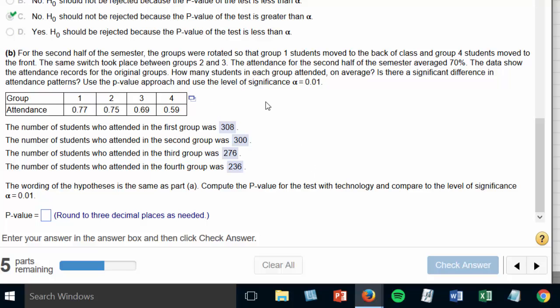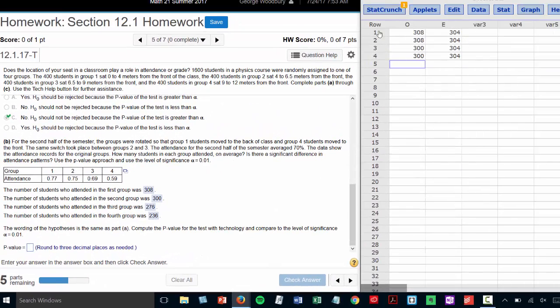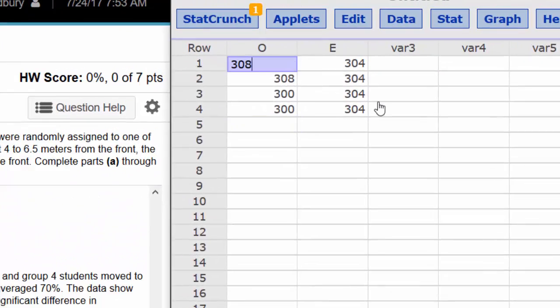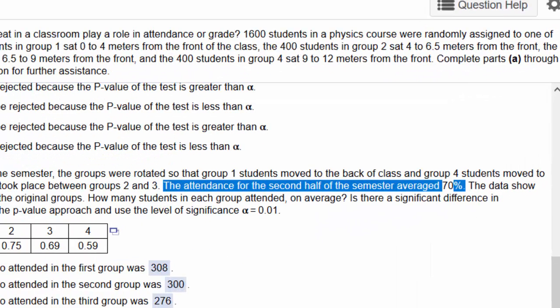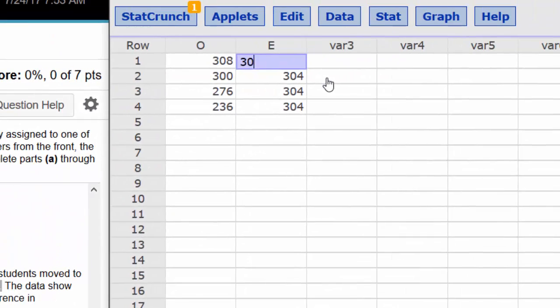Now it's time for the computation of the p-value for this scenario. So I'm going to go back to StatCrunch and I need to change these observed frequencies. The first one is still 308. The second one has dropped to 300. The third one is 276. And the fourth one was 236. Now for the expected frequencies, we were told that attendance for the second half of the semester averaged 70%. So I'm going to take the 400 in each group and multiply it by 70%. That's 280. So I'll change each expected frequency to 280.